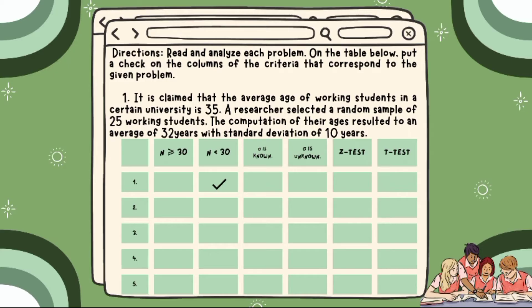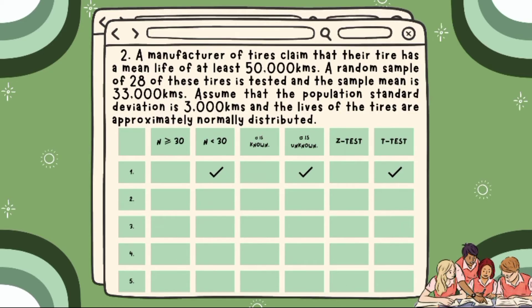Answer: Our N is less than 30. The population standard deviation is unknown based on the given. The N is 25 which is less than 30. So the test statistic that we are going to apply is the T-test.